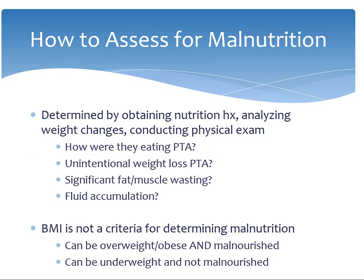Instead, dietitians will determine malnutrition by obtaining a nutrition history, analyzing weight changes, and conducting a physical exam. Questions we might ask the patient include how the patient was eating prior to admission, if they have noticed any weight changes, and examine for fat and muscle wasting. If we cannot speak to the patient — if they're intubated or sedated — we will try to speak with family members who can provide an accurate history, call nursing homes, or at the very least perform a physical exam.